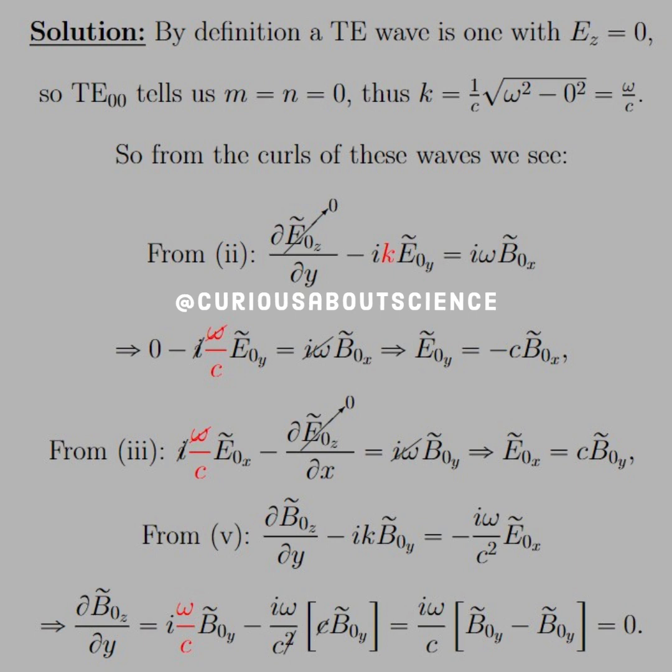And so from the curls of these waves, since Ez is equal to 0, we know from equation 2 that the z component goes to 0, so that partial goes to 0. And we get that Ey is equal to negative c B0x. Similarly, from 3, again, the z component goes to 0, cancel away everything we need. We get E0x equals cBy. And then from 5, we get that B0z is equal to some factor B0y. And then we have to substitute in E0x, which we just found was a function of y. So let's substitute that in, cancel. And then we see, oh look at that, we get a minus sign, everything cancels out. So we see that the partial of B0z is equal to 0, so B0z has to equal 0.